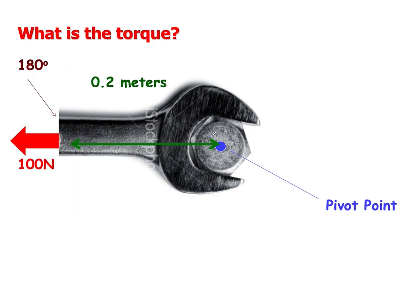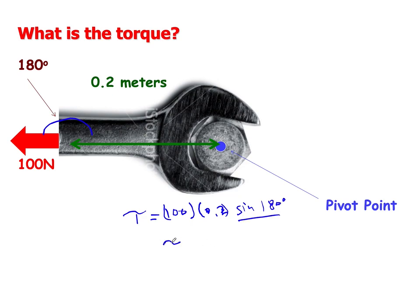What about this one? The angle between R and the force is 180 degrees. So the torque is 100 newtons times 0.2 meters times sine of 180°. Sine of 180° is zero, so the torque is just zero newton-meters. This force won't actually produce a torque — you can see that logically, conceptually, or mathematically.